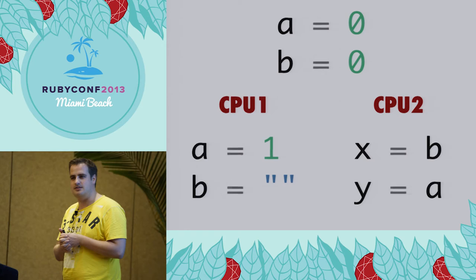We're using mutable state because we have a problem we want to solve this way. We initialize these variables first, then we change them and use them in another CPU or thread. The question is: what can happen here? What are the possible orders in which you might see things?